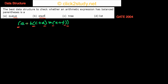The first two options are queue and stack. You must know that queue is a much more powerful data structure than stack. Whatever you can do with a stack you can definitely do with a queue, but there are things you can do with a queue that a stack cannot do. So if you can do something with just a stack, you don't need a queue, because that's a simpler data structure.